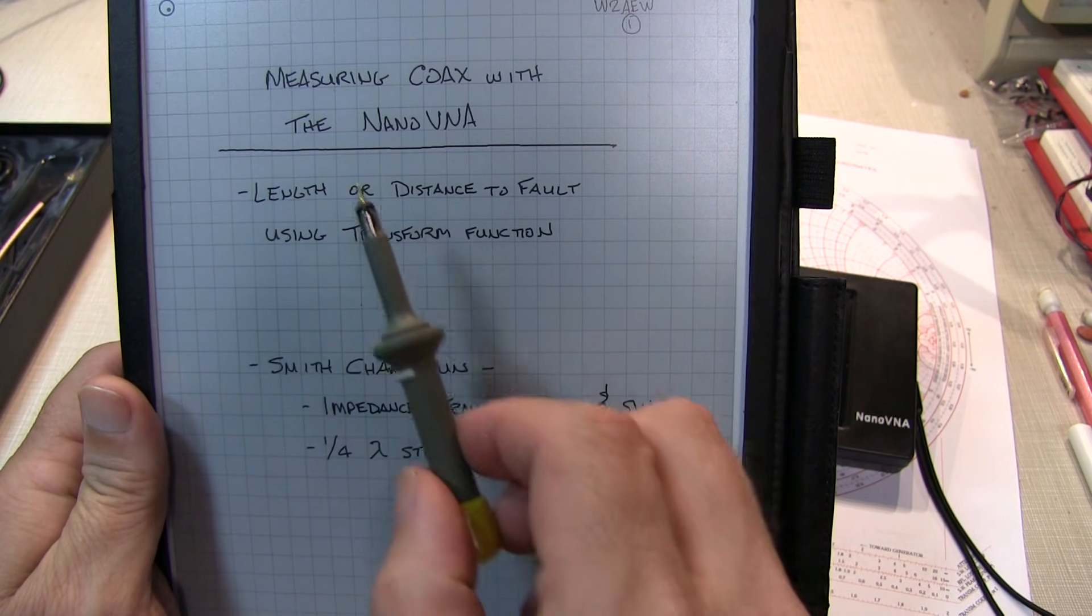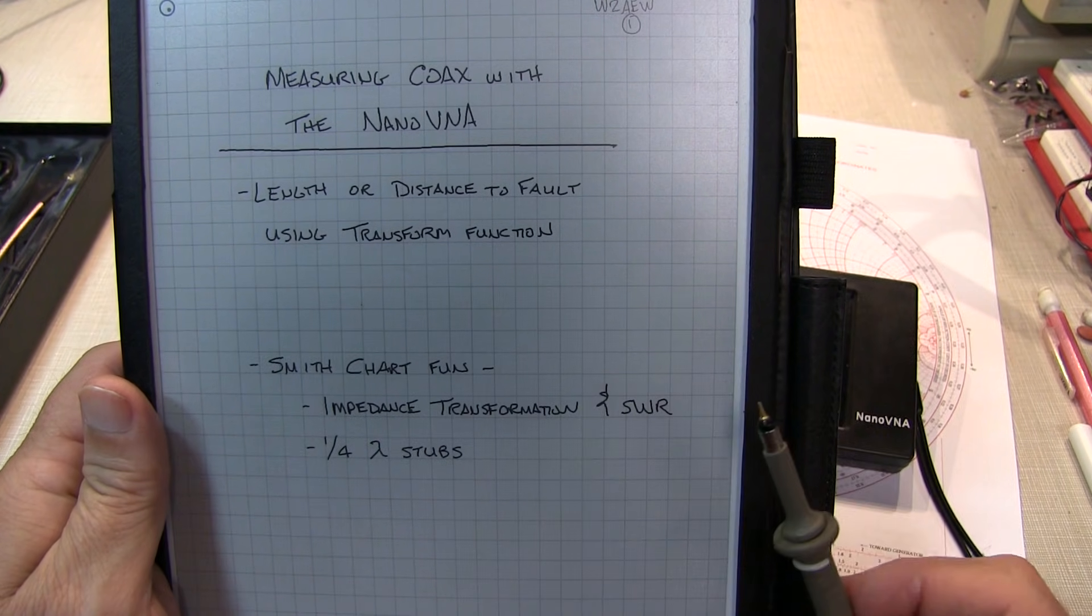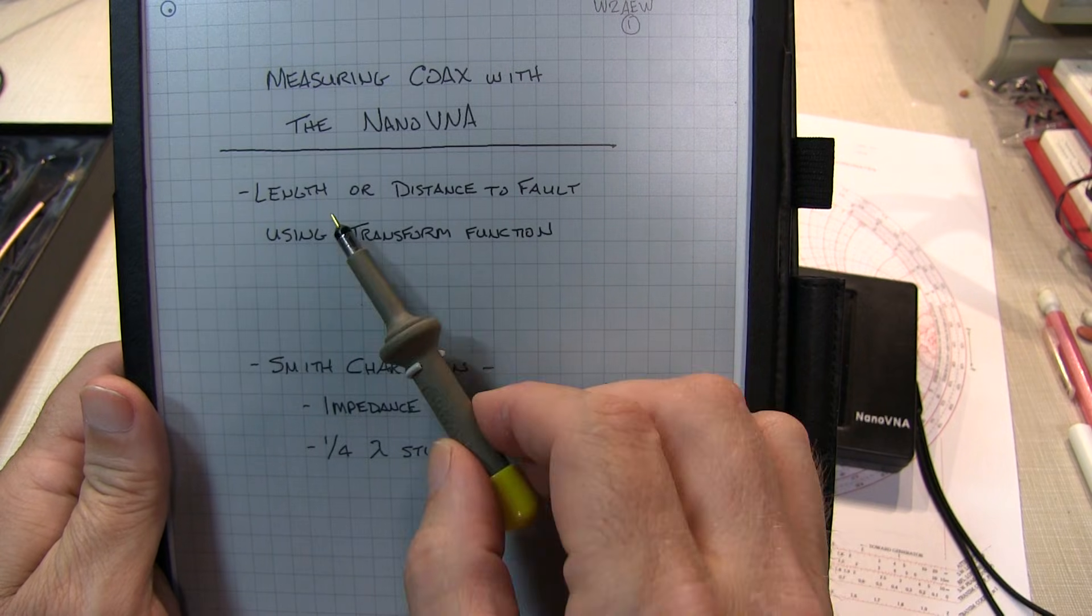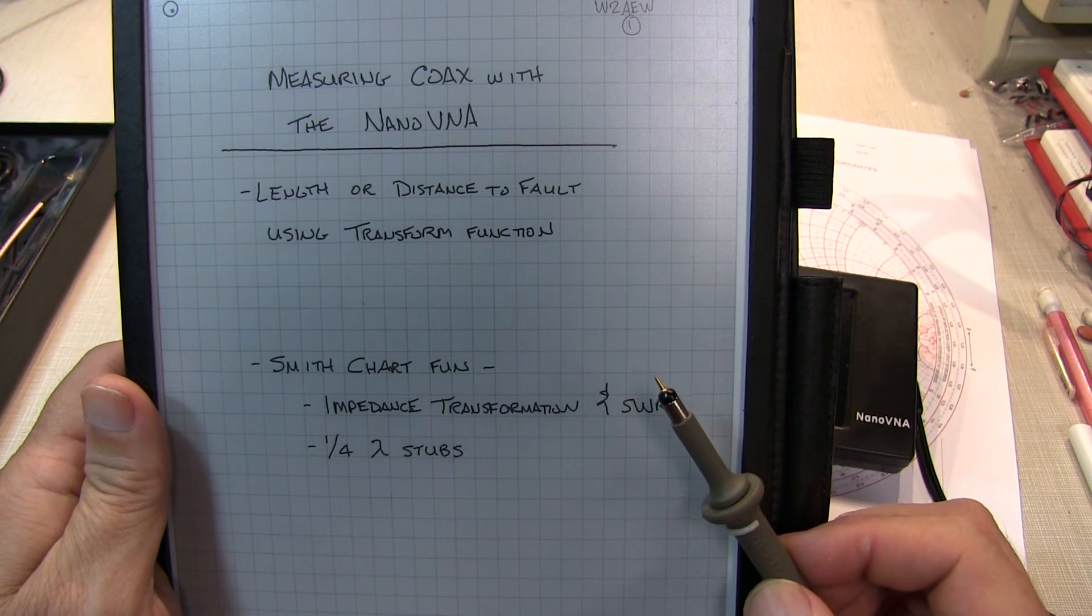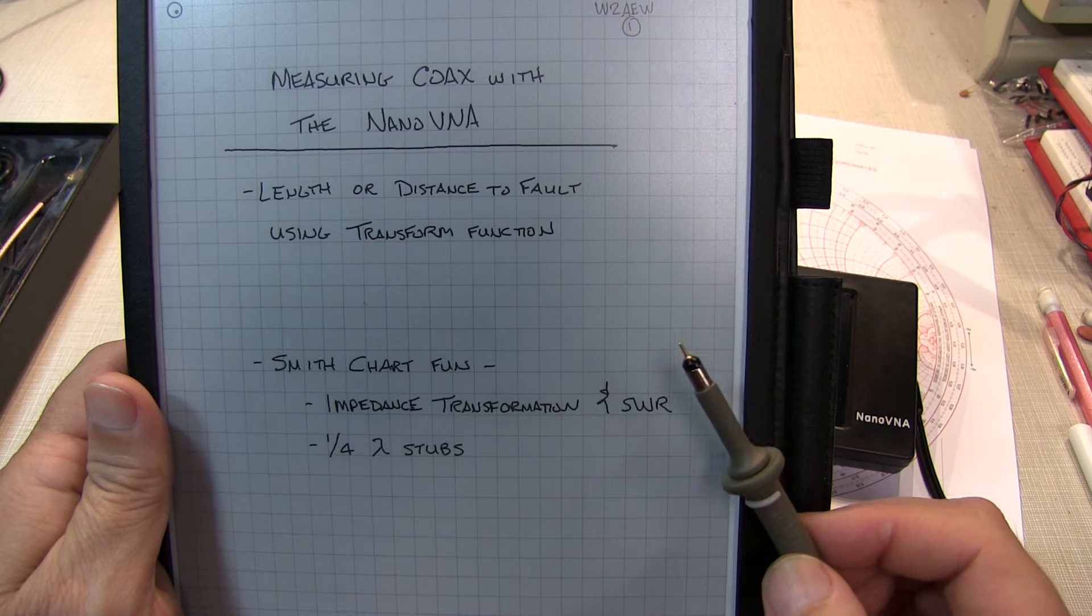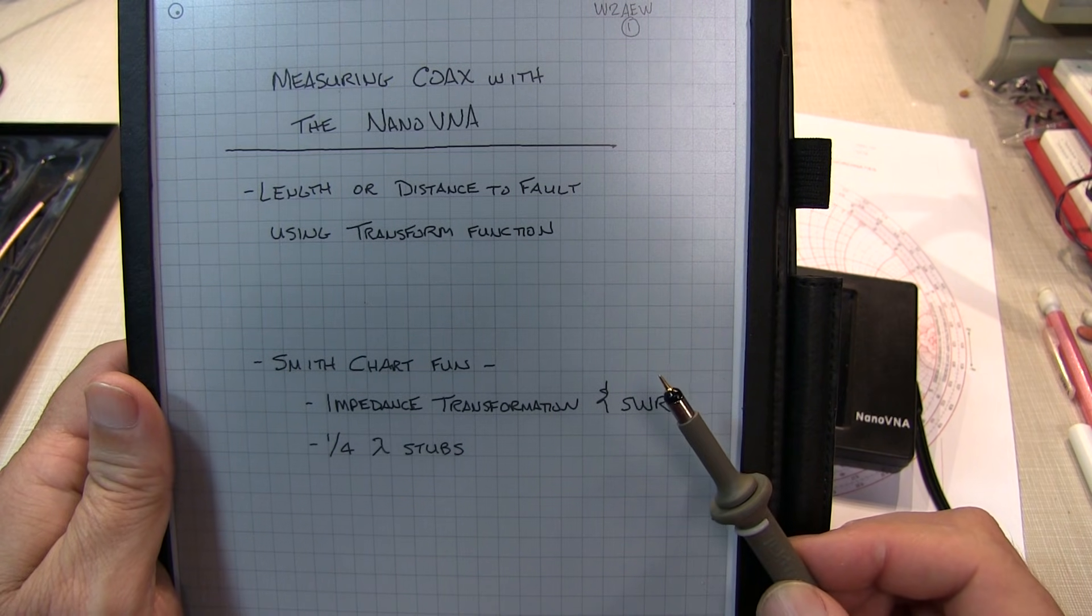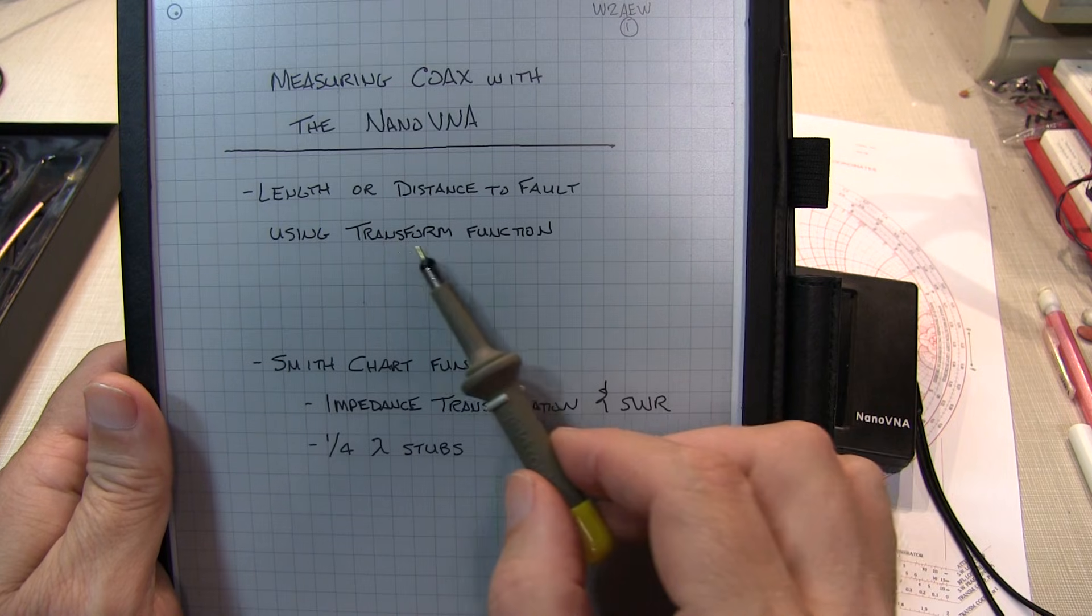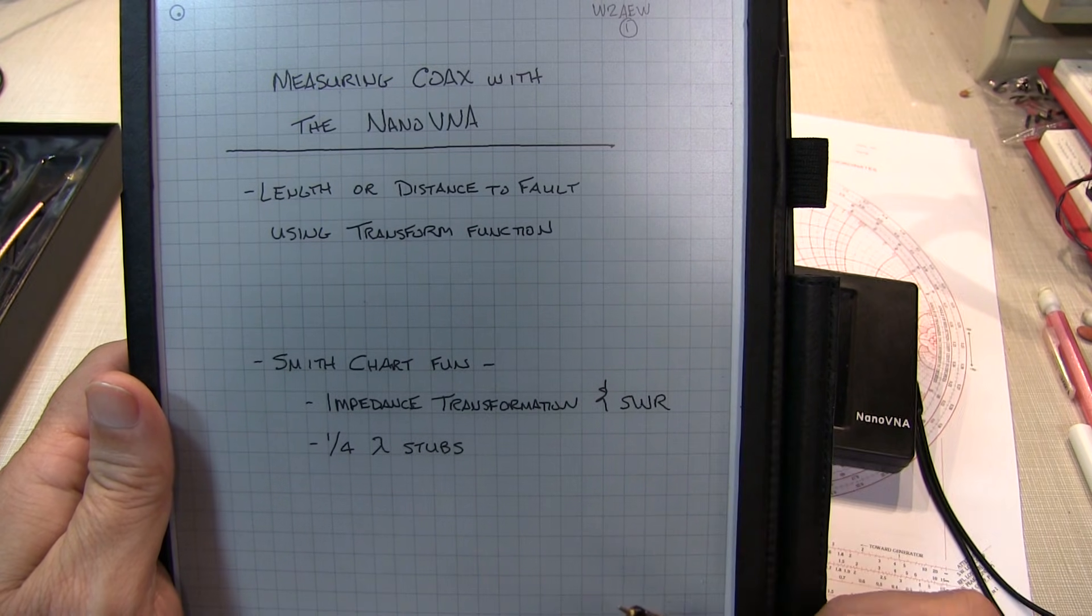Today's video is a two-parter on measuring coax with the NanoVNA. In the first part, we'll look at measuring the length or distance to fault in coax, probably one of the more common tasks you might use the VNA for, and this is using the transform function.